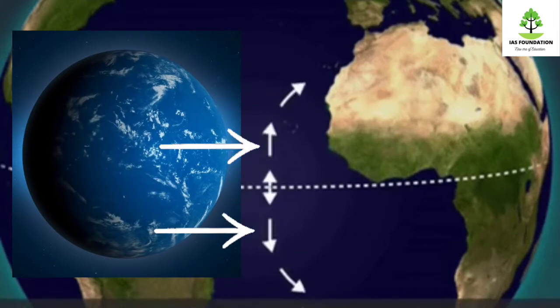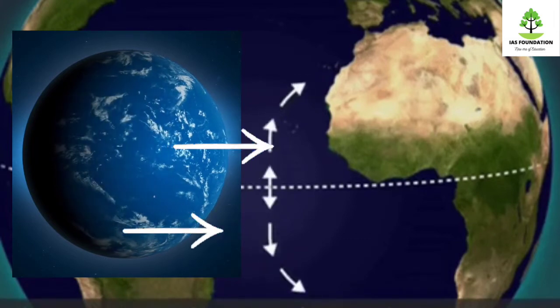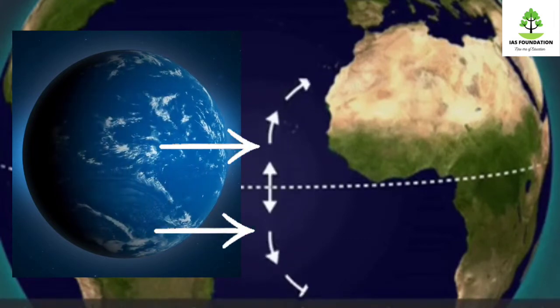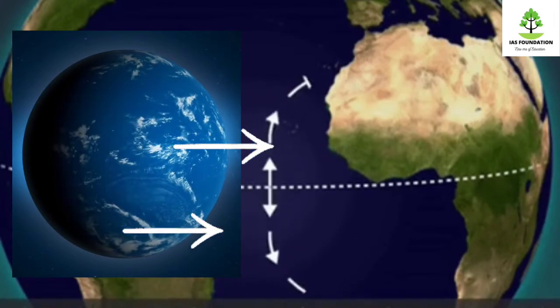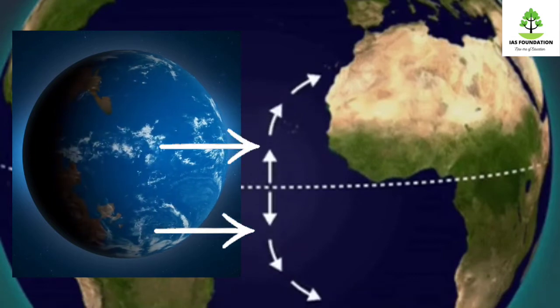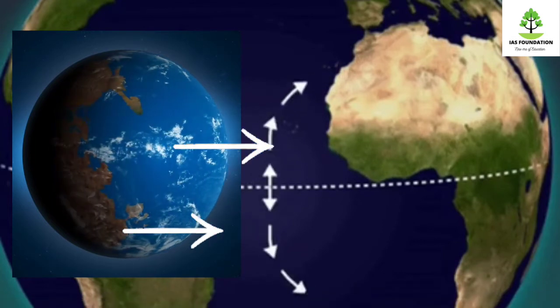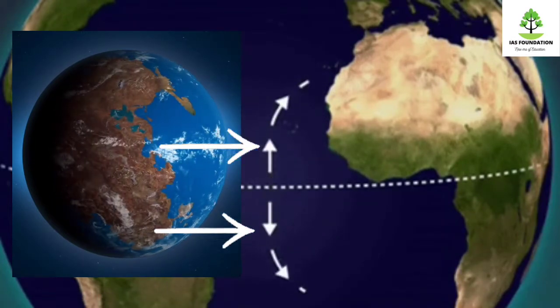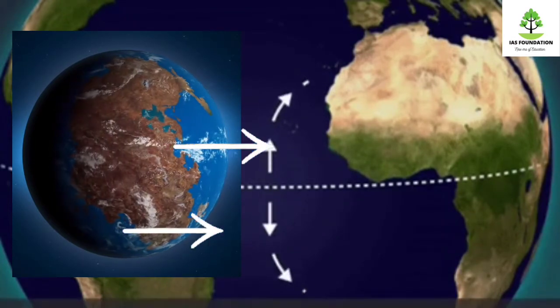The pressure gradient force is perpendicular to the isobar. When the wind moves straight, it is then deflected to the right or left side by the Coriolis force.